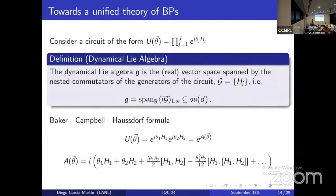For this we consider circuits in a very general form where each gate is written as the exponential of a Hermitian operator H_j with parameter θ_j. For these circuits we can define the so-called dynamical algebra, which is the real vector space spanned by all the H_j's — the generators of the circuit. This algebra is a subalgebra of the unitary algebra. The dynamical algebra tells you the ultimate expressivity of your circuit. Intuitively, via the BCH formula, the product of two exponentials can be written as a new exponential whose exponent is a linear combination of all nested commutators.